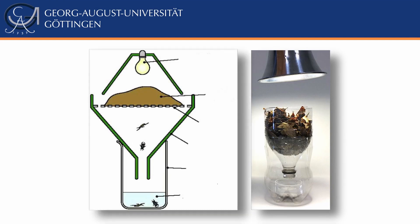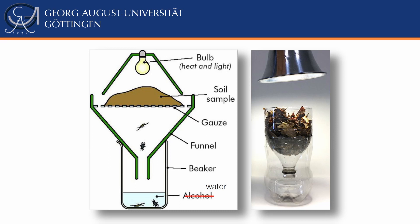The collected litter or soil sample or grass patch is placed on a mesh. Above the mesh is a heat source. Below the mesh is a cooling substrate in which soil organisms are trapped — usually glycol or ethanol, because it conserves the animals, but these liquids kill them. We use water to catch the animals alive. Most soil animals can live submerged in water for many days or weeks.